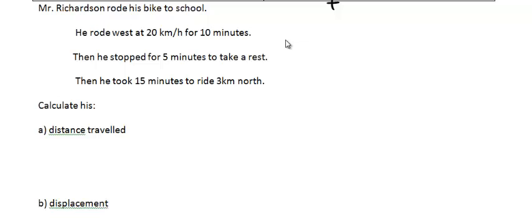Mr. Richardson rode his bike to school. He rode west at 20 kilometers per hour for 10 minutes. Then he stopped for 5 minutes to take a rest. Then he took 15 minutes to ride 3 kilometers north.